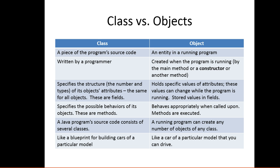A class specifies the possible behaviors of its objects - these are the methods. An object behaves appropriately when it's called upon, that is, the methods are executed. A Java program's source code can consist of several classes. A running program can create any number of objects of any class.